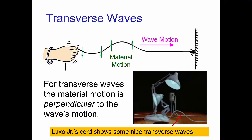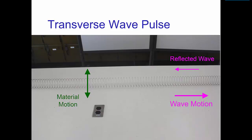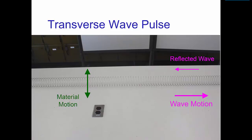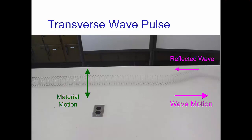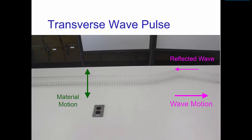For example, as Luxo Junior is hopping, there's a transverse wave pulse that travels down the cord. Here's a quick video that shows transverse waves traveling down a slinky. You see the motion of the material is up and down.